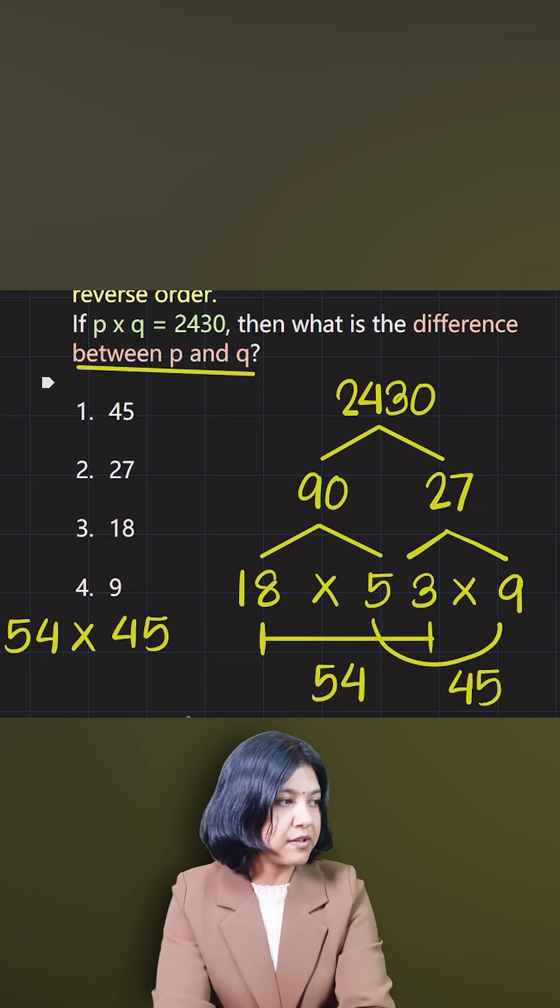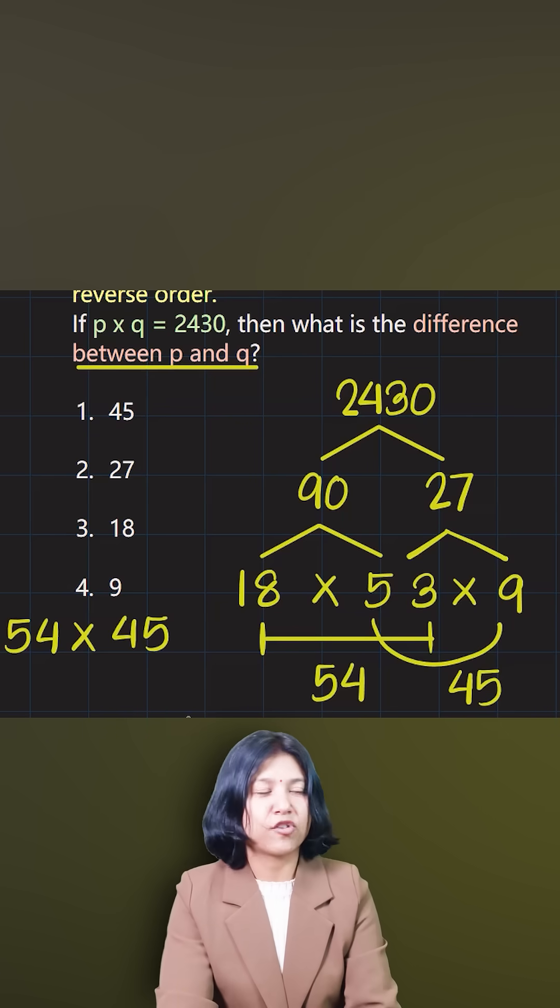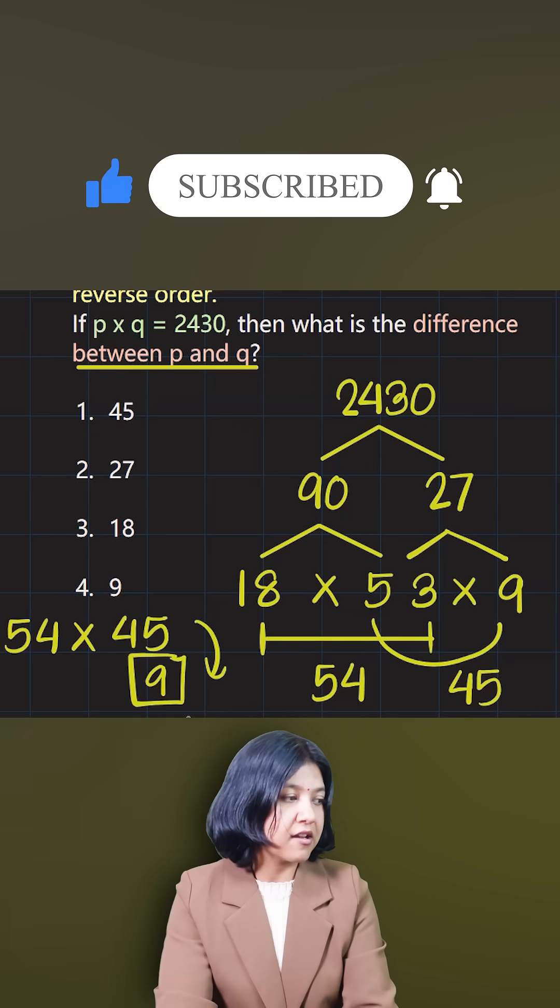The question is asking me to find the difference between p and q because 54 minus 45 is just 9. The answer has to be 9.